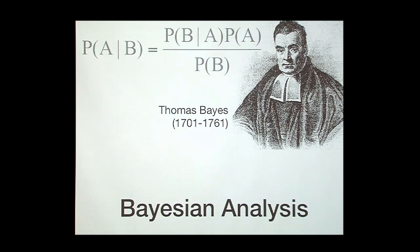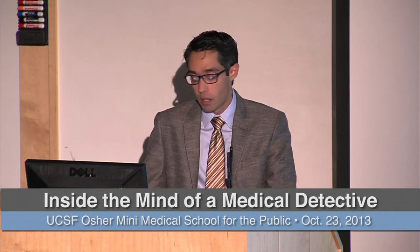Thomas Bayes was an 18th-century English mathematician — also a Presbyterian minister — who never actually published the famous formula for which he's known; it was published after his death by a colleague. Real-world applications include Nate Silver of 538.org, who used Bayesian analysis to correctly predict the winning presidential candidate in 99 out of 100 states across the 2008 and 2012 elections, the winner of 66 out of 68 senatorial races, and the NCAA basketball tournament winner in 2012 and 2013. Bayesian analysis has been applied to baseball, gambling, financial forecasting, physics, and of course medicine and medical decision-making.